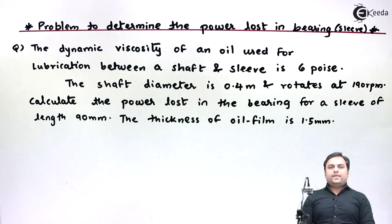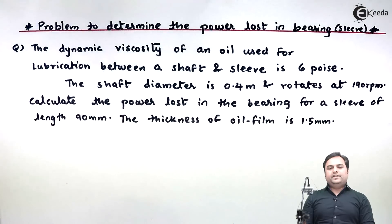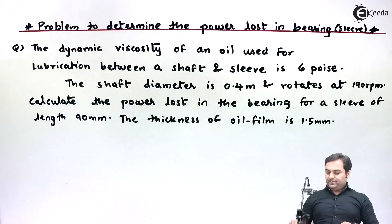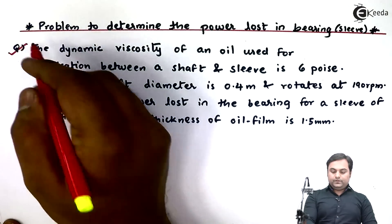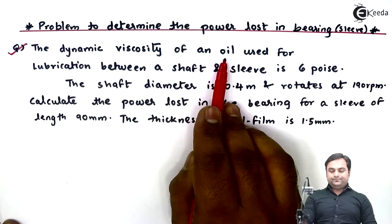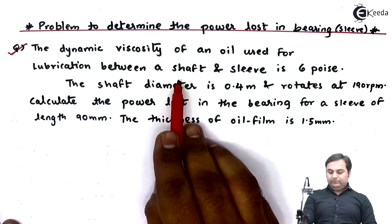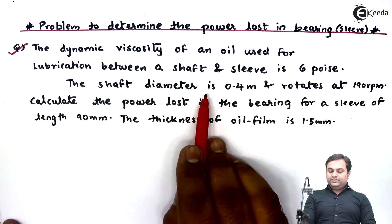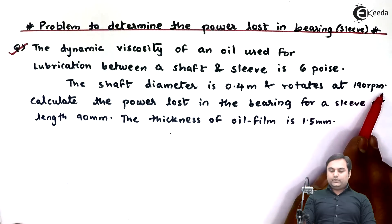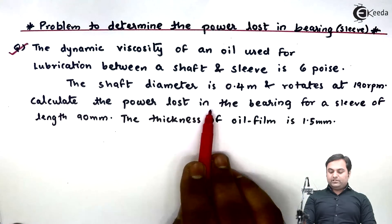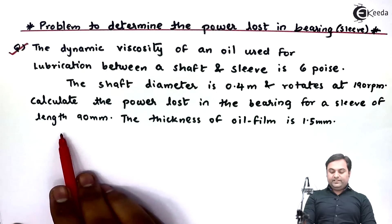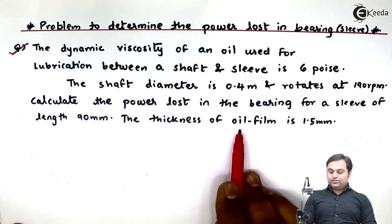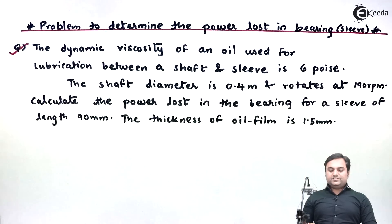Hello friends, in this video we will see a problem in which we have to calculate power lost in the bearing, which is also called a sleeve. The dynamic viscosity of an oil used for lubrication between a shaft and sleeve is six poise. The shaft diameter is 0.4 meter and rotates at 190 rpm. Calculate the power lost in the bearing for a sleeve of length 90 mm. The thickness of the oil film is 1.5 mm.